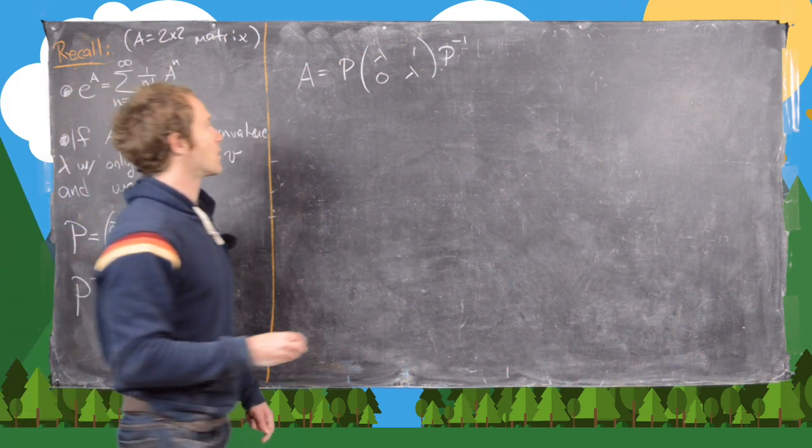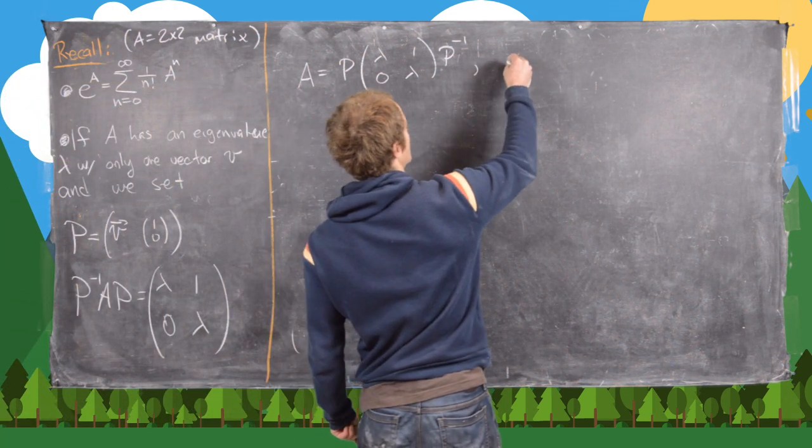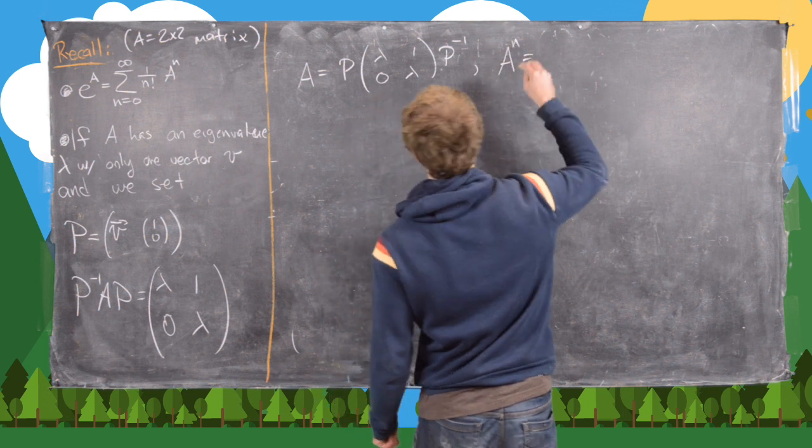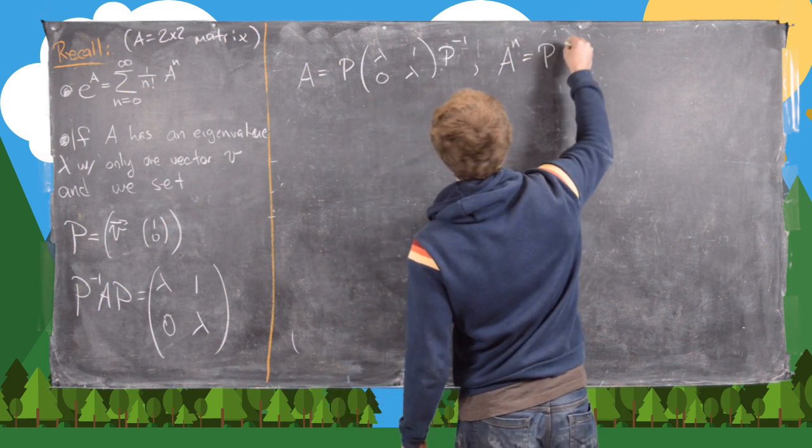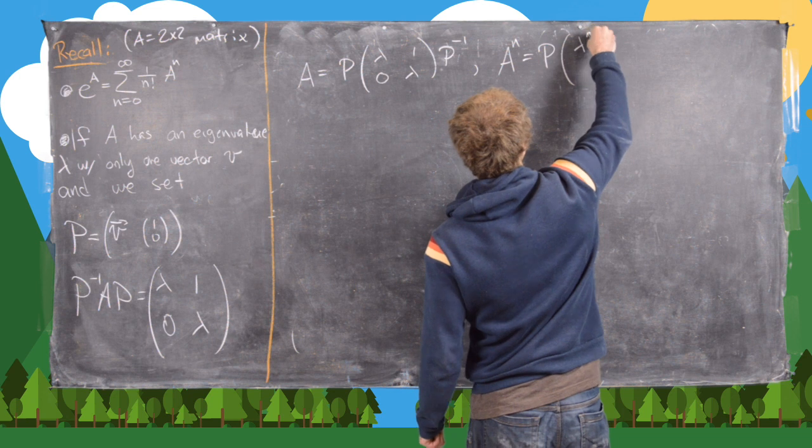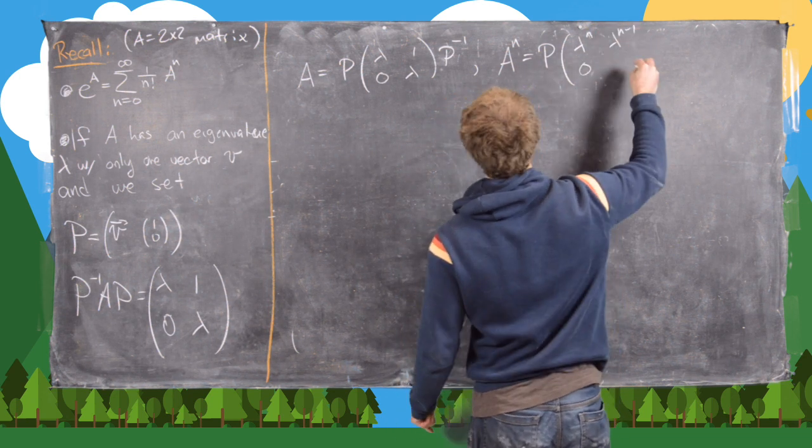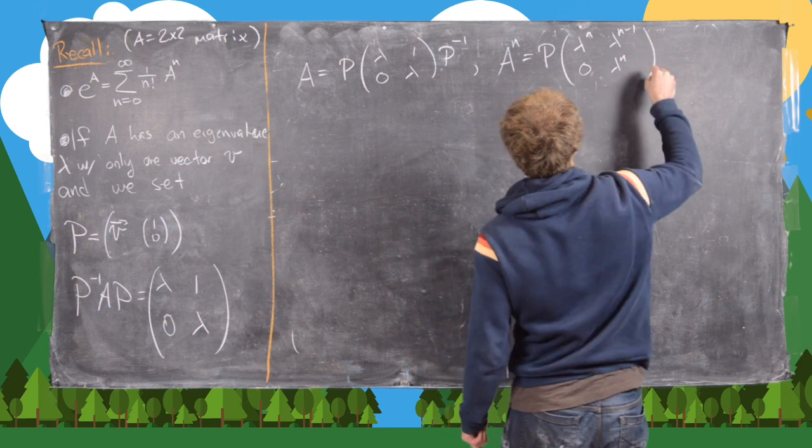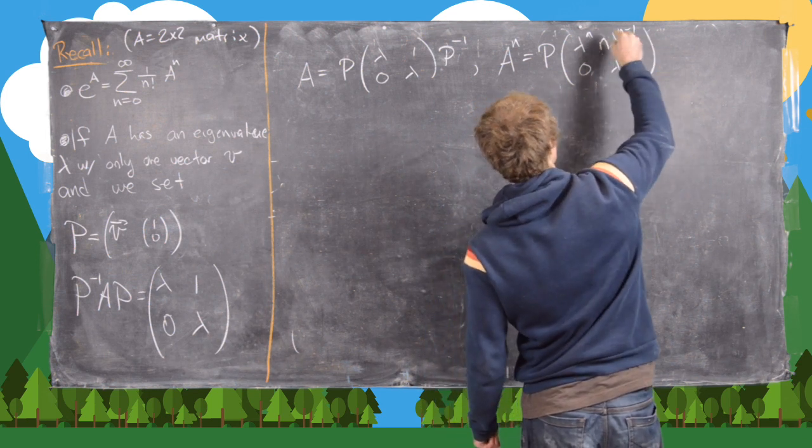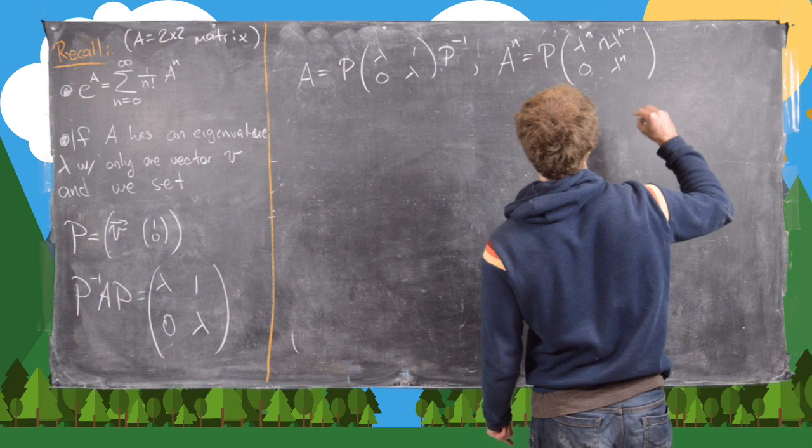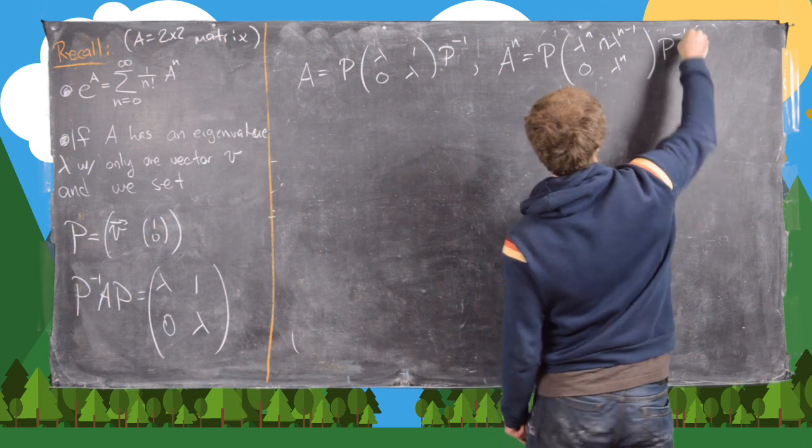And furthermore, we can readily check that A to the n is equal to P times—now we're going to get λⁿ here, 0, nλⁿ⁻¹ here, and then λⁿ—sorry, this should be nλⁿ⁻¹ there, and then here we have P inverse.